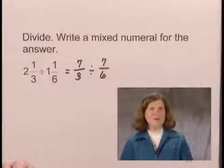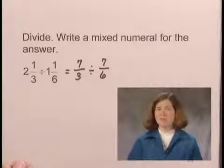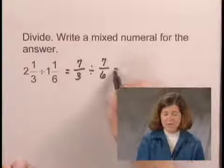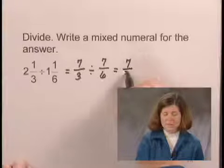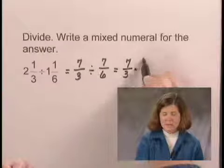Now in order to divide fractions, we multiply the first fraction by the reciprocal of the second fraction. So we have 7/3 times 6/7.